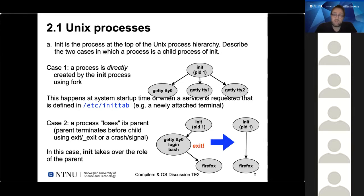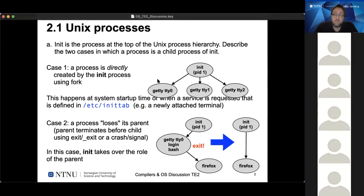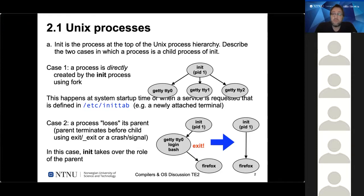The inittab contains processes to be started at system startup. Additionally, init can create new processes while running — for example, when there is a new connection to a serial line. This happened regularly when computers had dial-up connections requiring a modem and telephone line. Whenever there was a new incoming modem connection, init spawned a new getty process, enabling a user who dialed into the Unix machine to log in. That's the regular case where a process is directly created by init.